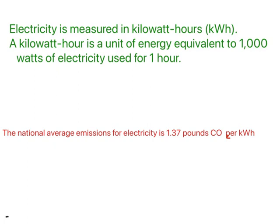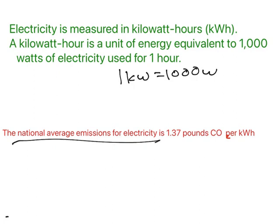A watt goes up to a kilowatt, and one kilowatt is the same as 1,000 watts. Now, the national average emissions for electricity is 1.37 pounds per one kilowatt hour.